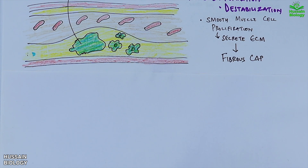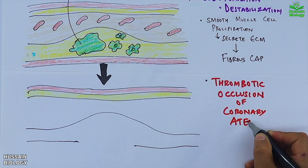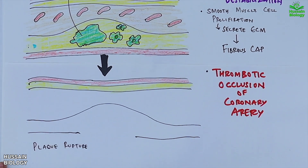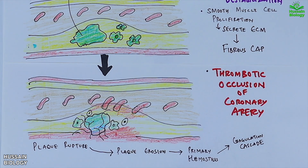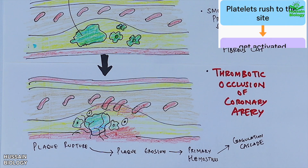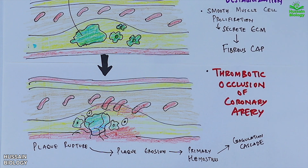The third step is thrombotic occlusion of the coronary artery. The vulnerable fibrous cap ruptures, exposing the necrotic core to the bloodstream, as shown in the diagram. This exposed material is highly thrombogenic, meaning it rapidly triggers the clotting cascade. As a result, platelets rush to the site, get activated, and a thrombus or blood clot begins to form right over the rupture. This thrombus can grow quickly, blocking the entire lumen of the coronary artery.